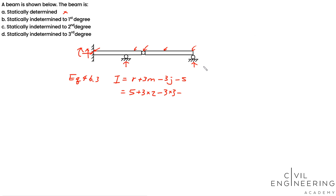And minus s. This s is called special conditions. So according to the reference manual, s will equal to 1 for each internal hinge, and then s will equal to 2 for each internal roller.